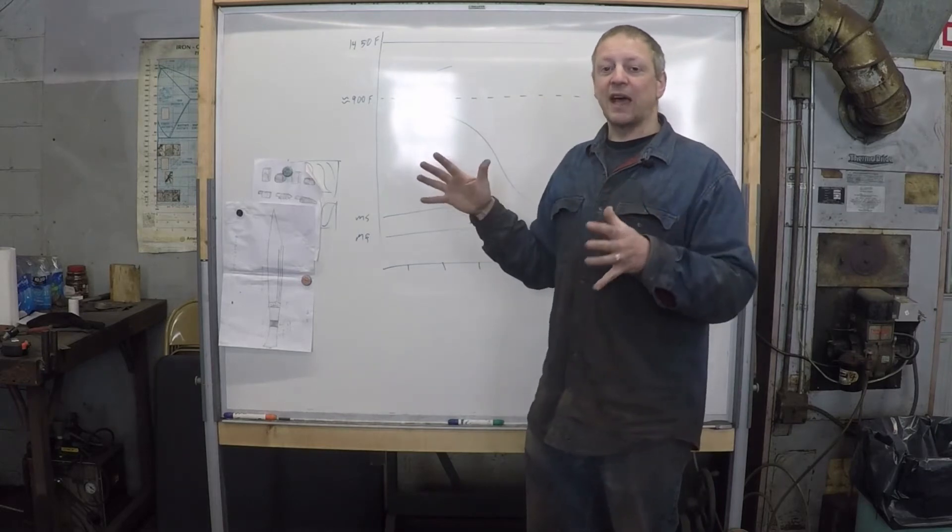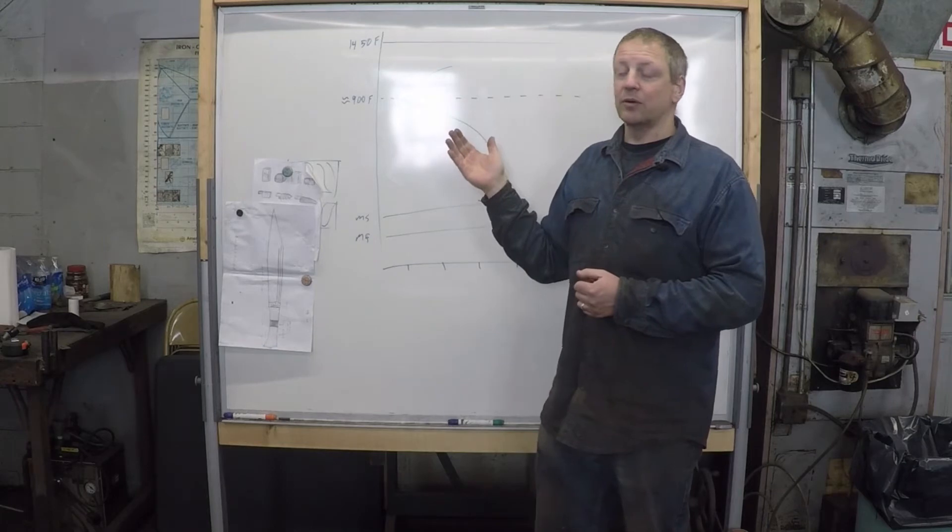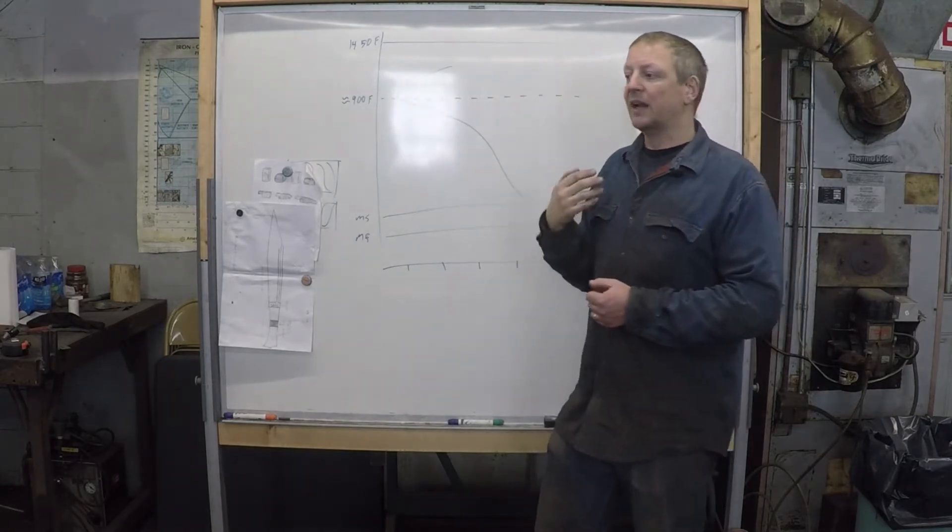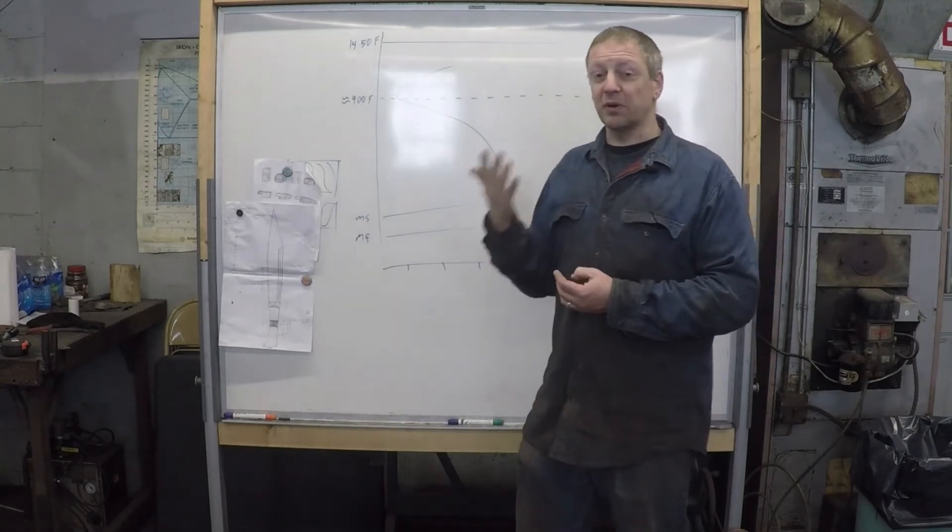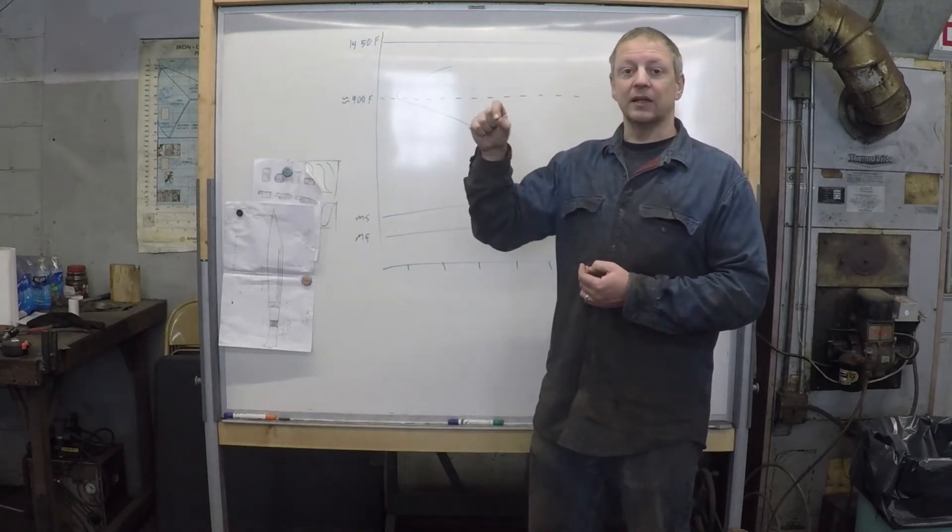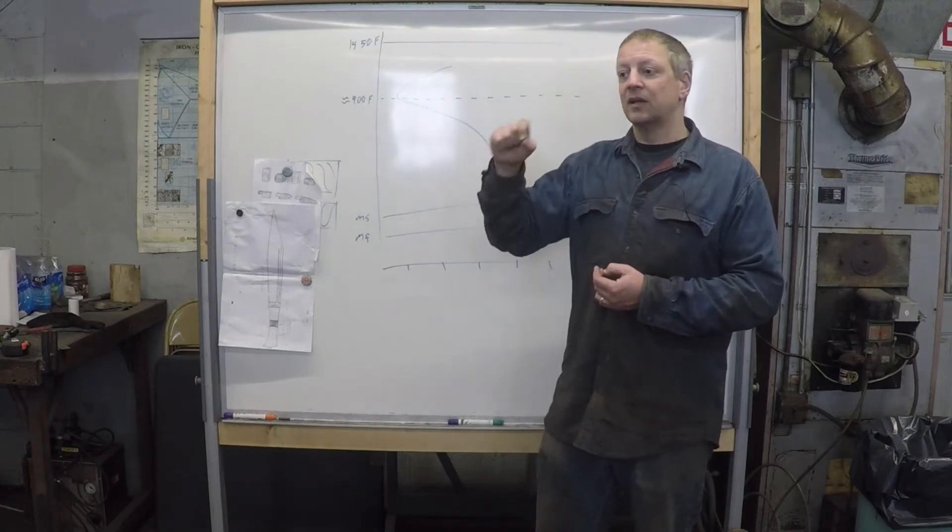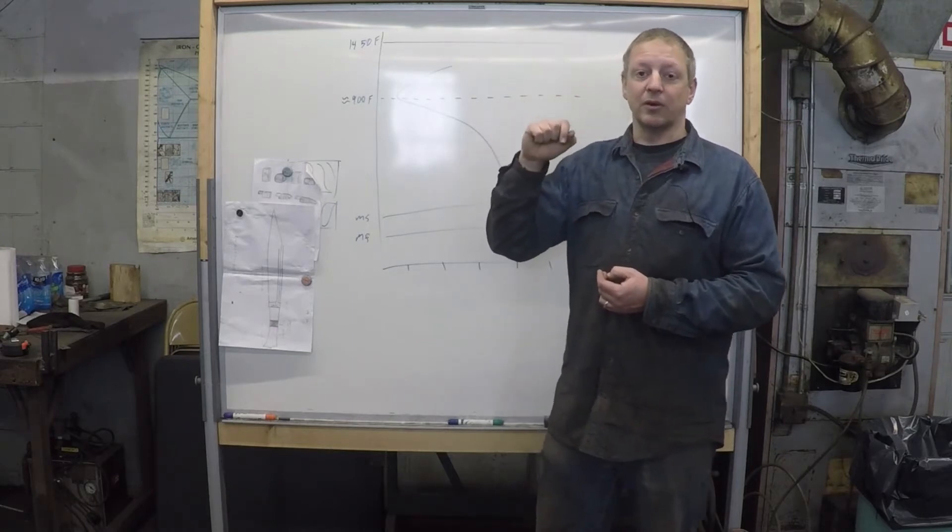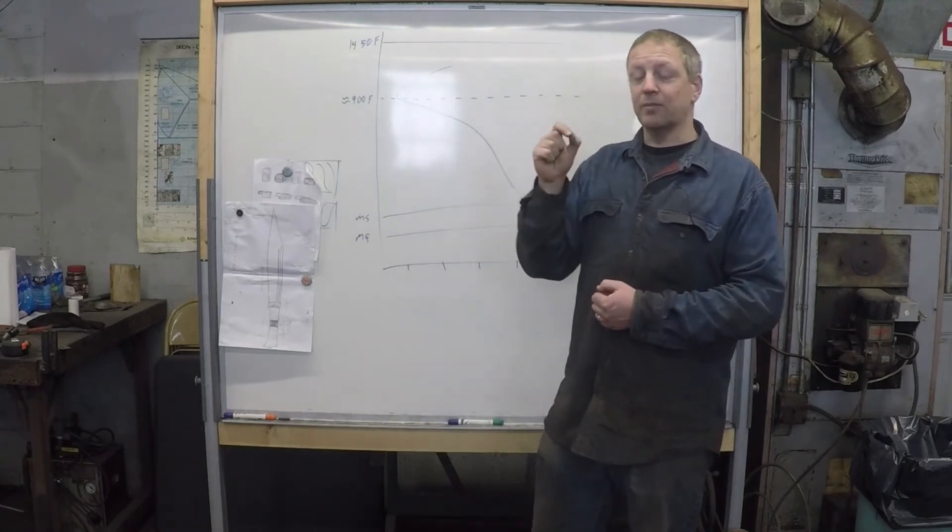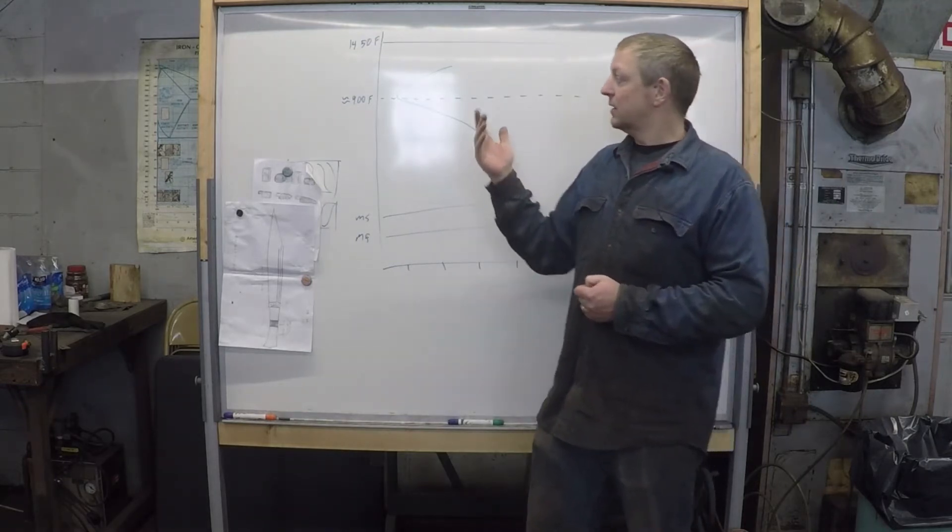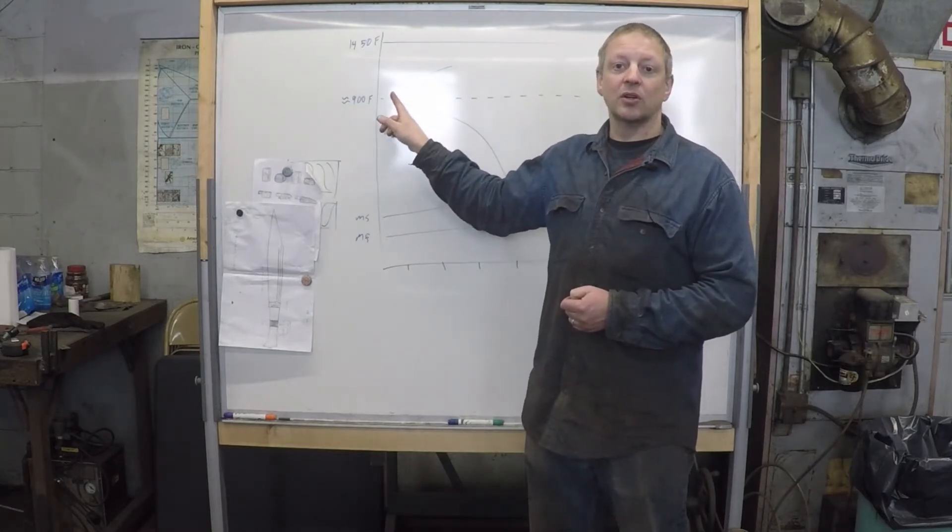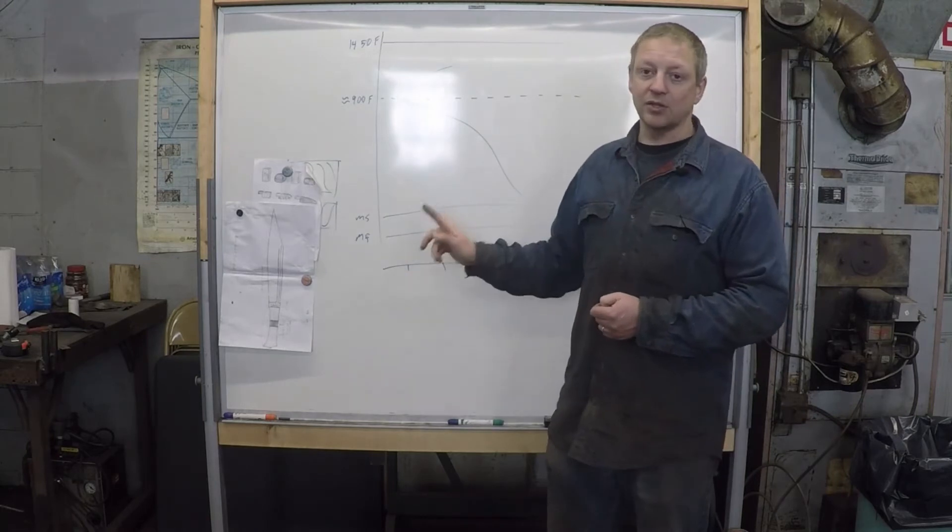However, the downside of this, kind of amusingly enough, is having carbides still in solution changes where this nose is. So that brings us, what's this nose? That nose is essentially, if you pass through it, it's perlite. And why is it generally right around 900 degrees? That's because when you're cooling fairly quickly, that's the temperature at which perlite forms most quickly, or begins to form most quickly.